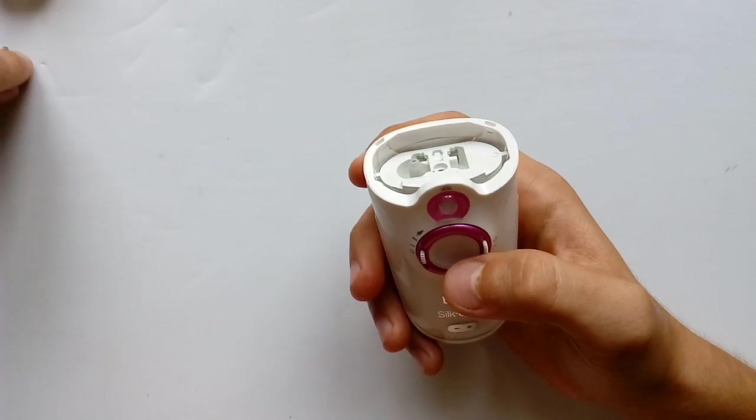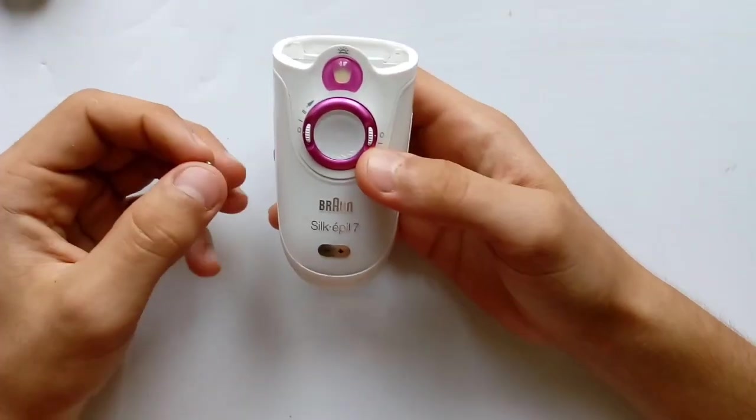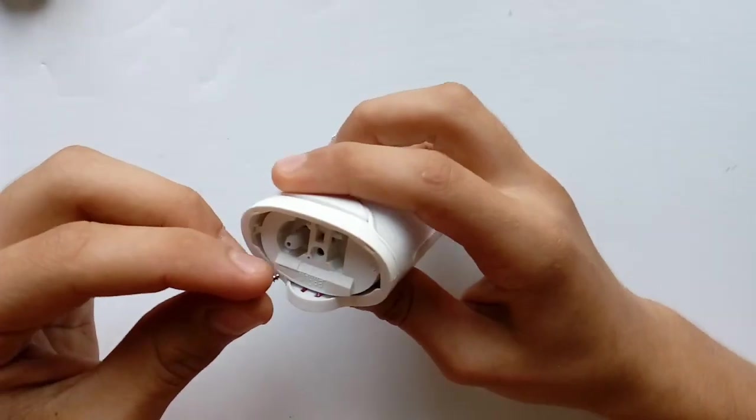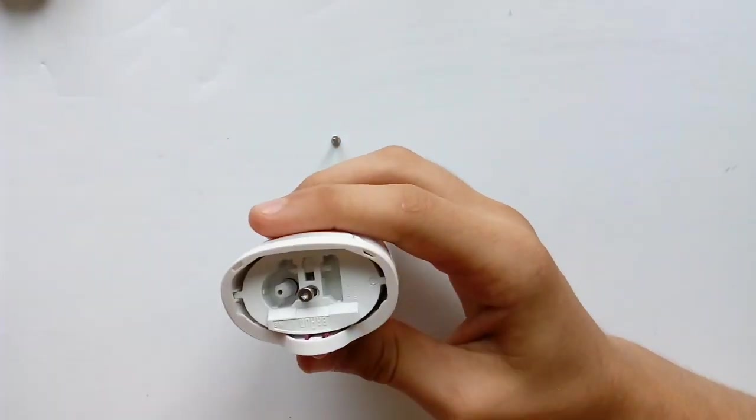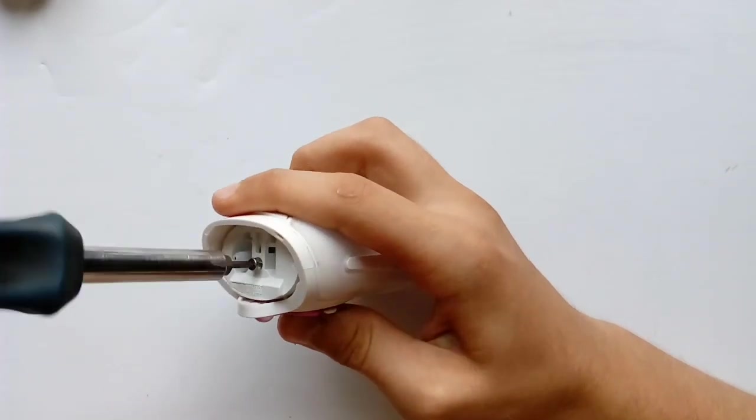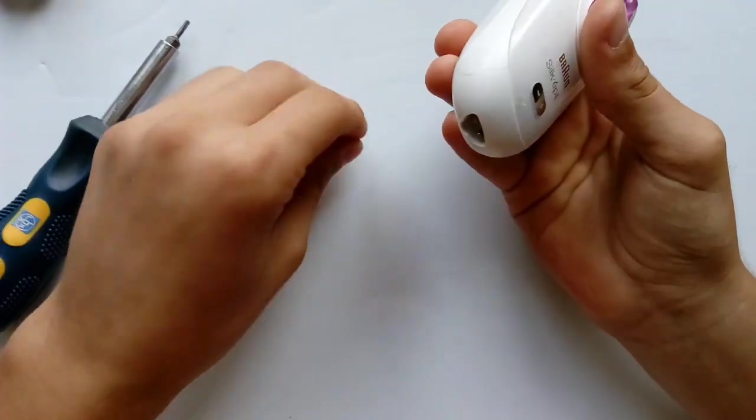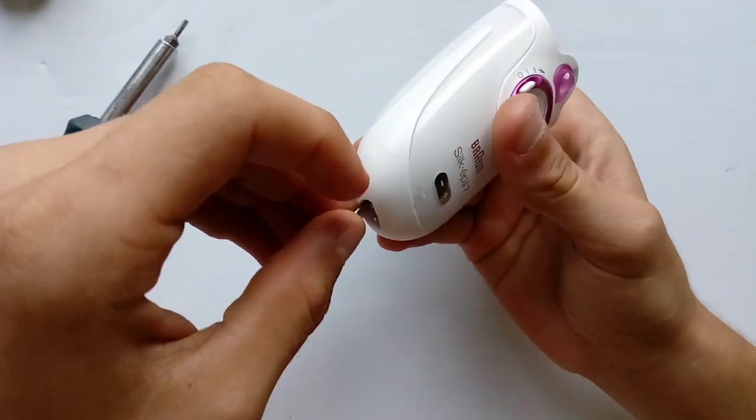Now you need to put the screws back into place. You put this smaller one on the top. Don't over tighten it. And the second one on the bottom.